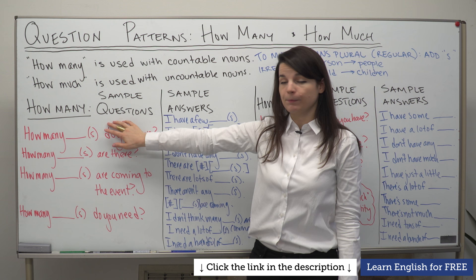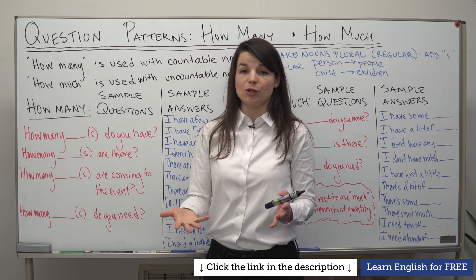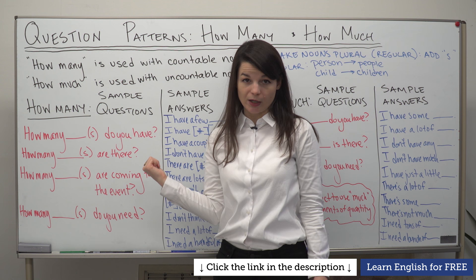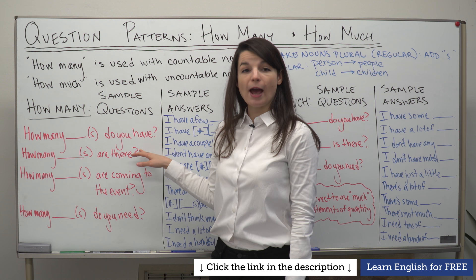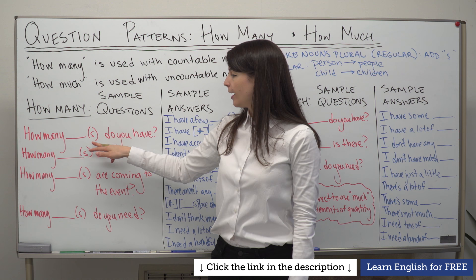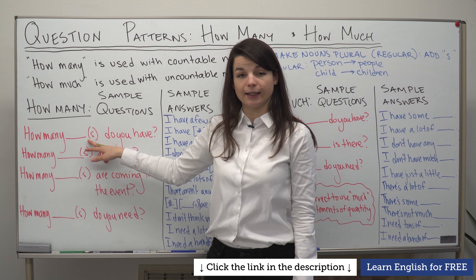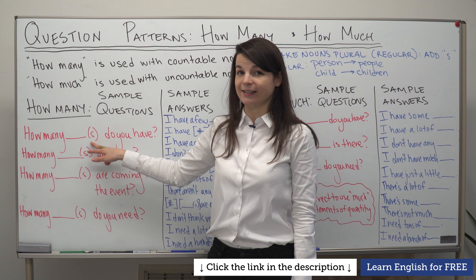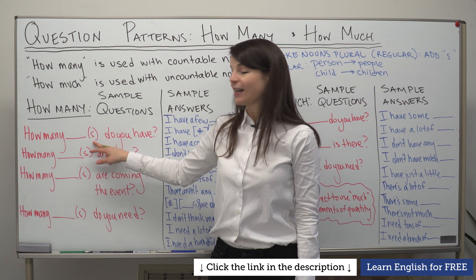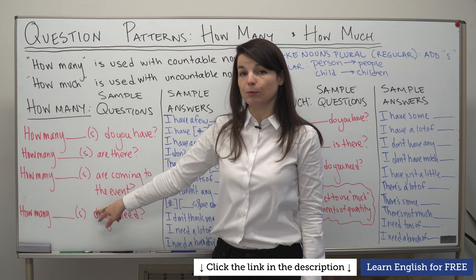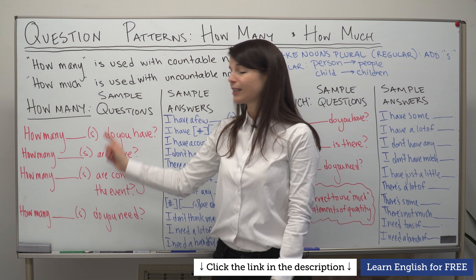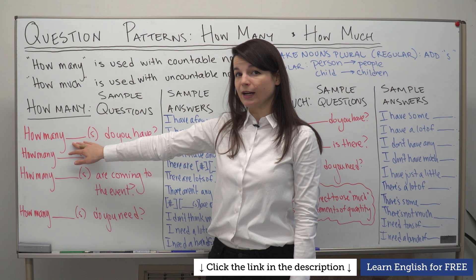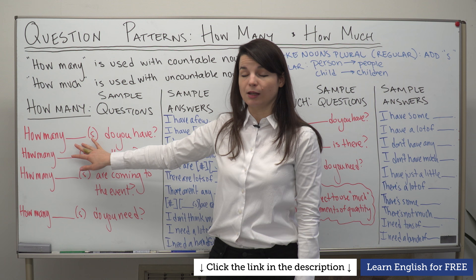These are a few sample 'how many' questions you might use in everyday life. First: 'How many somethings do you have?' The S in parentheses is here because for regular nouns, we use the plural form. If you're using an irregular noun like 'children', you don't add an extra S. You need to use the plural form — 'How many children do you have?' is correct, but 'How many child do you have?' is incorrect.